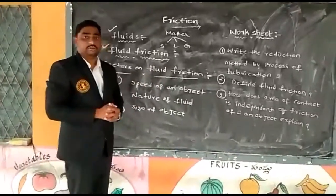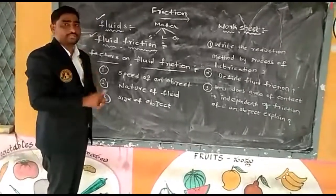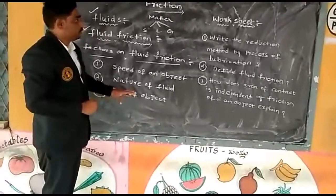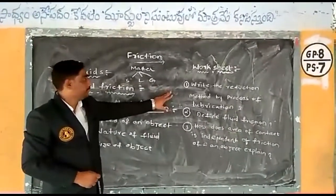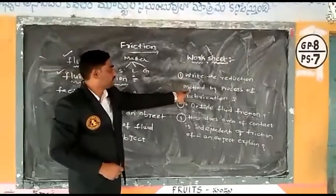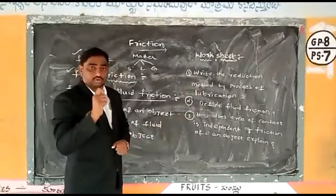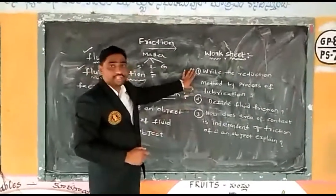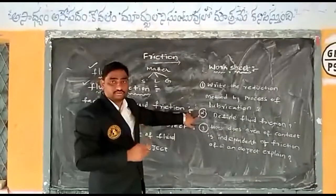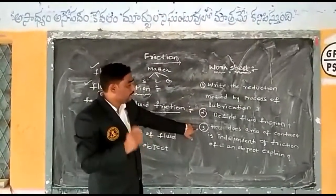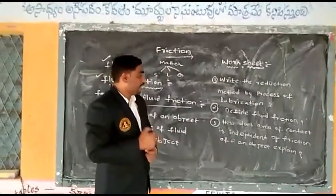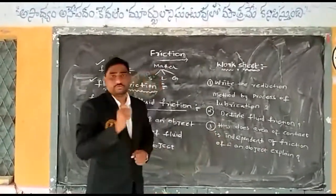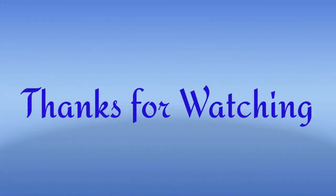Dear friends, in this lesson I have covered all the important topics for the annual examination. Now let me give you a worksheet with a few questions. First question: write about the reduction method by the process of lubrication — what does lubrication mean and how does it work? Second: define fluid friction along with an example. Third: how is the area of contact independent of friction of an object? Explain. I hope you understand friction very well. Thank you very much.